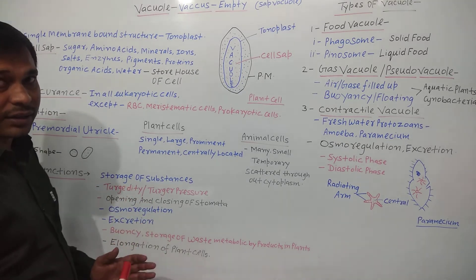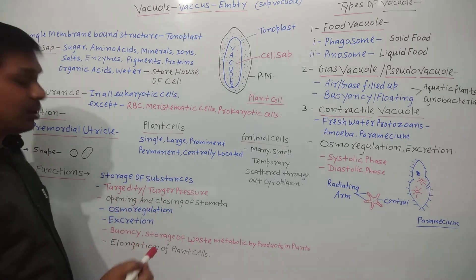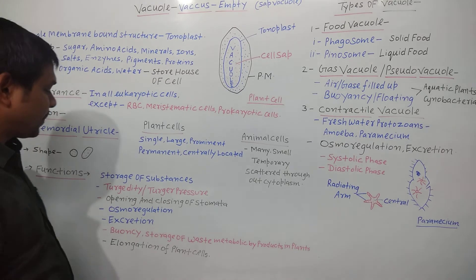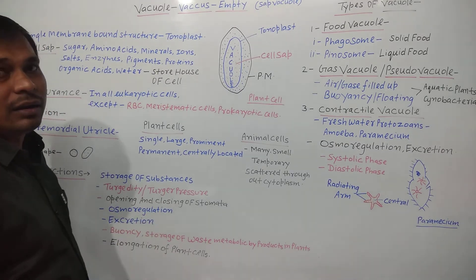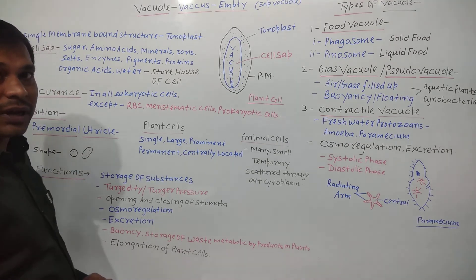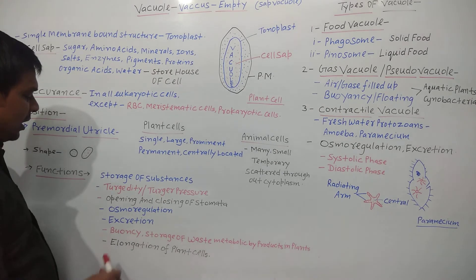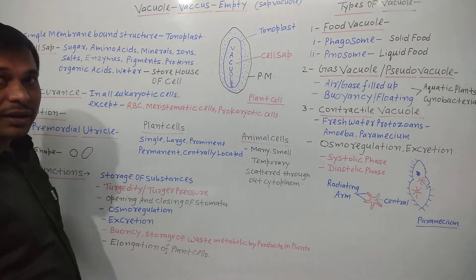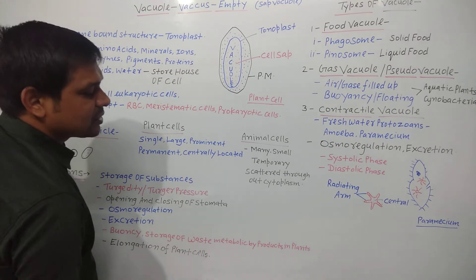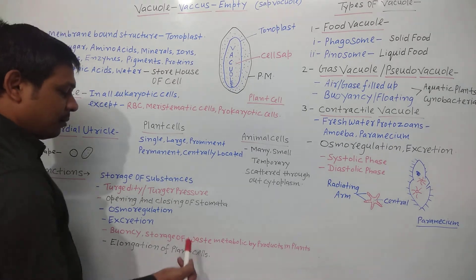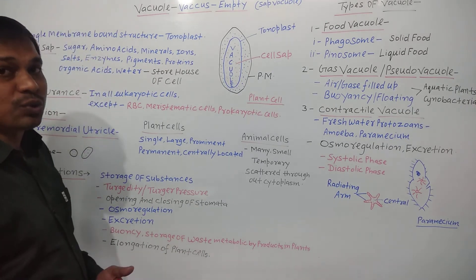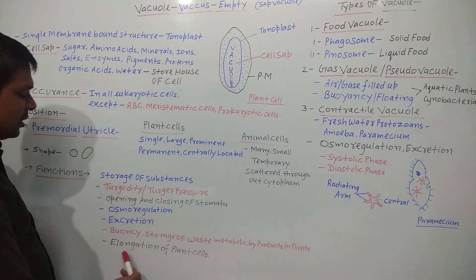Further functions include: osmoregulation — maintaining the amount of water and electrolytes; excretion — removal of nitrogenous waste like urea, ammonia, and uric acid in certain protozoans; providing buoyancy or floating ability to organisms; and storage of toxic, poisonous, or waste metabolic byproducts in plant cells.